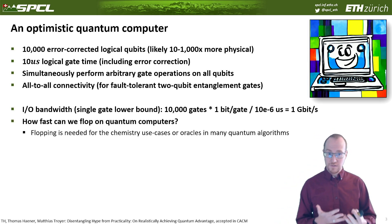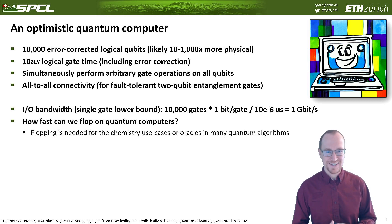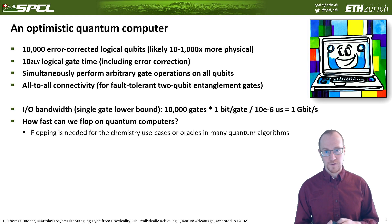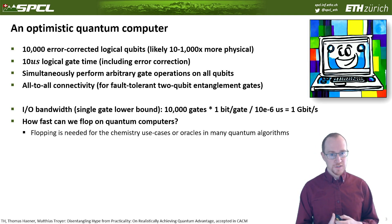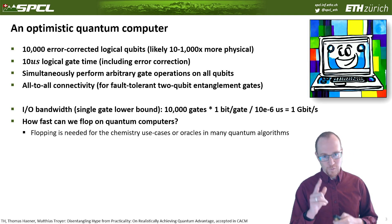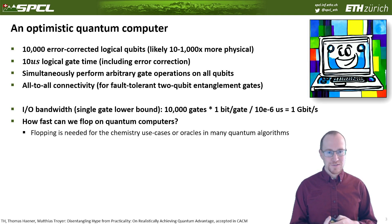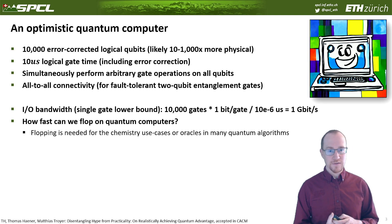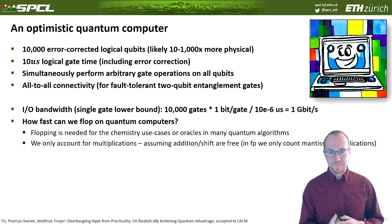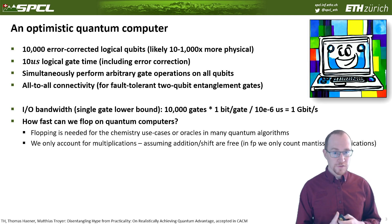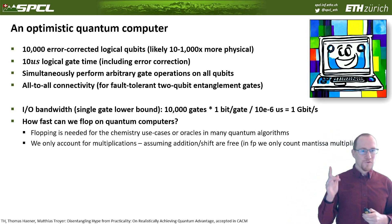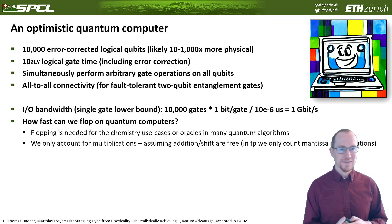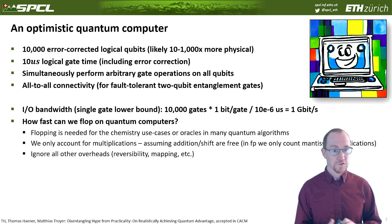This is how fast we can read and write data — mostly reading data. Now the other question is: how fast can we evaluate oracles on a supercomputer? Oracles are classical computations that are needed as inputs to the quantum program. For example, if you have a chemistry use case, we would need to perform a certain number of floating-point operations that, depending on the chemical system described, may actually be quite demanding. In this analysis, we only account for multiplication — we assume addition and shift is free. So for floating-point numbers, we only count mantissa multiplications. We're being very optimistic for the quantum computer, paying only for the largest part of the computation and ignoring all other overheads like reversibility, where we need to add ancilla qubits, mapping to the physical machine, and so on.